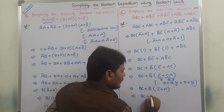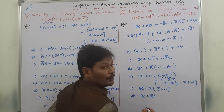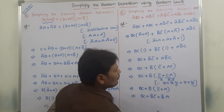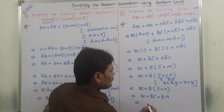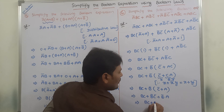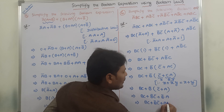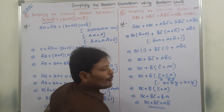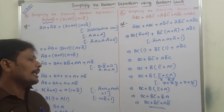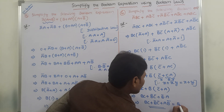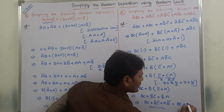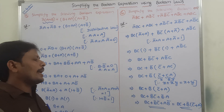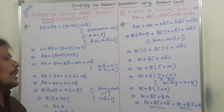So we have B·C plus B-bar·(C-bar plus A). Now applying the distributive law: B-bar·(C-bar plus A) expands to B-bar·C-bar plus B-bar·A. So the expression becomes B·C plus B-bar·C-bar plus A·B-bar. This is the minimized form. We can also write it as B·C plus B-bar·(C-bar plus A), which is also the minimized expression after simplifying this Boolean expression.